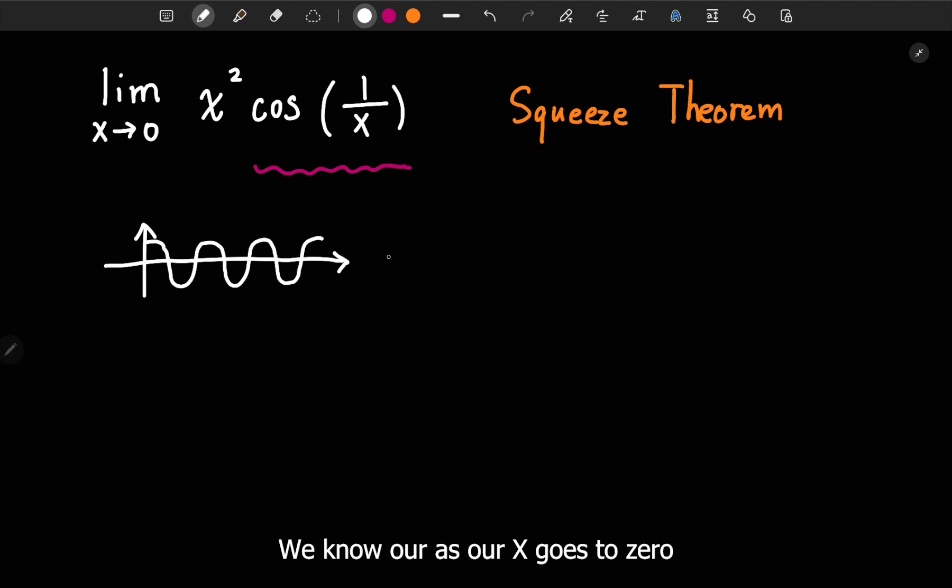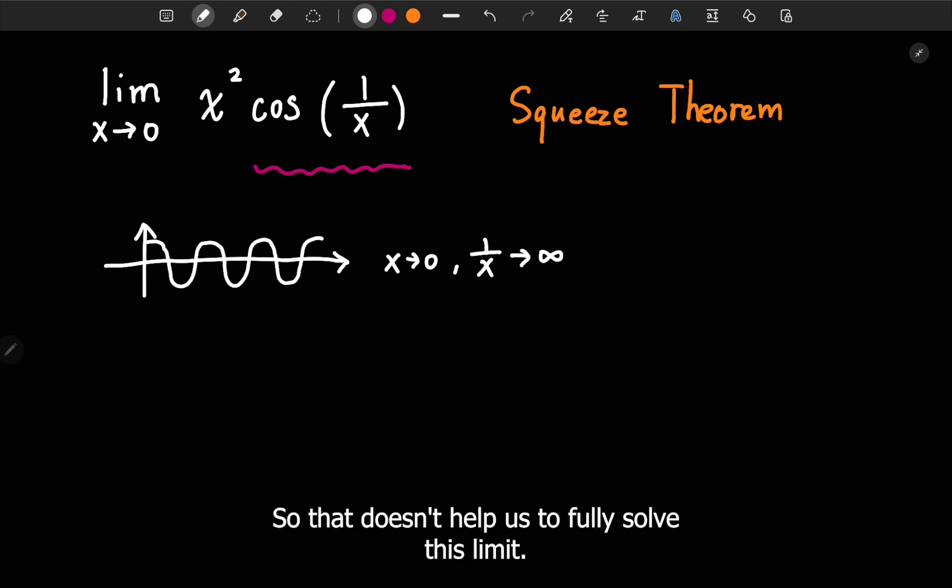We know as our x goes to 0, 1 over x will go to infinity. But still, cosine of infinity still oscillates between 1 and negative 1. So that doesn't help us to fully solve this limit.